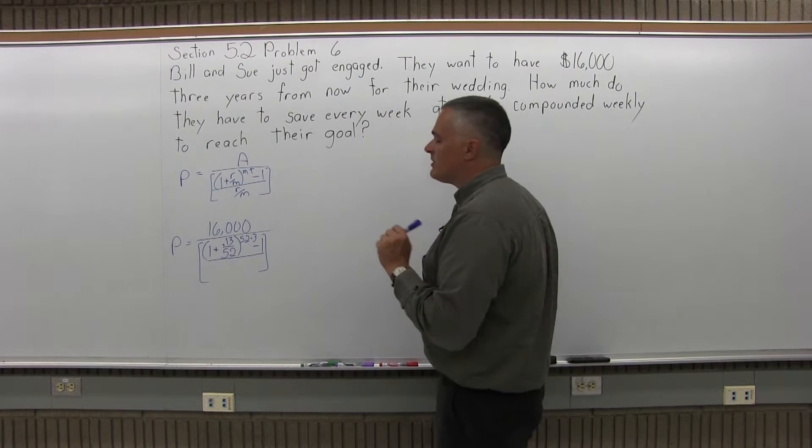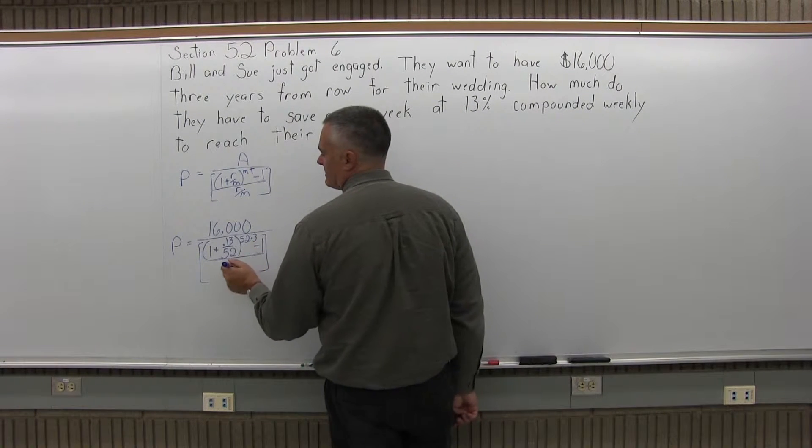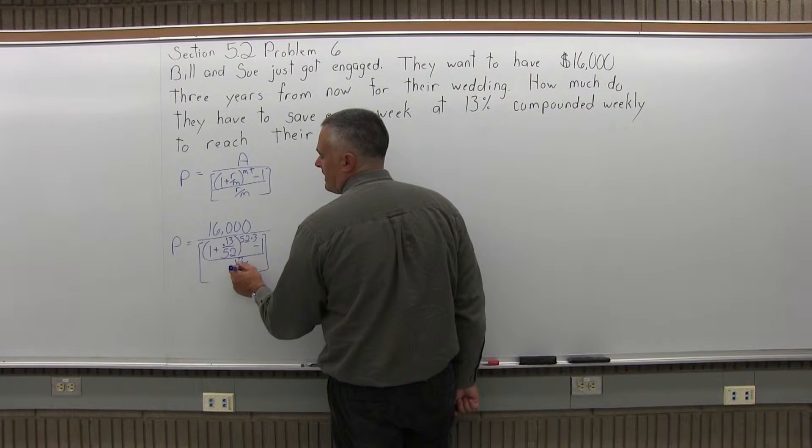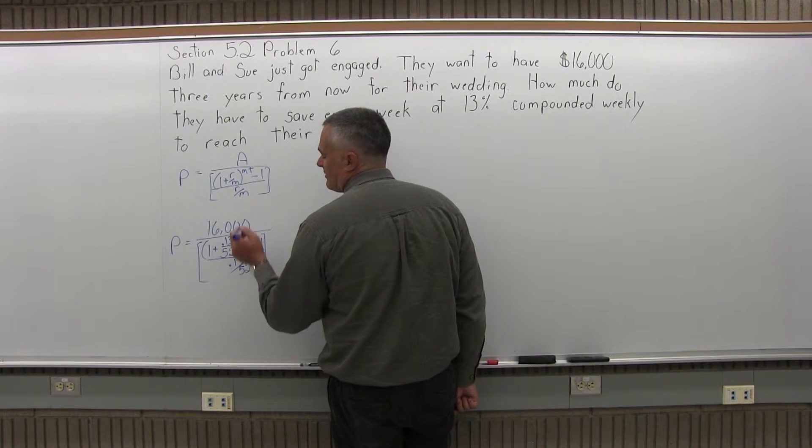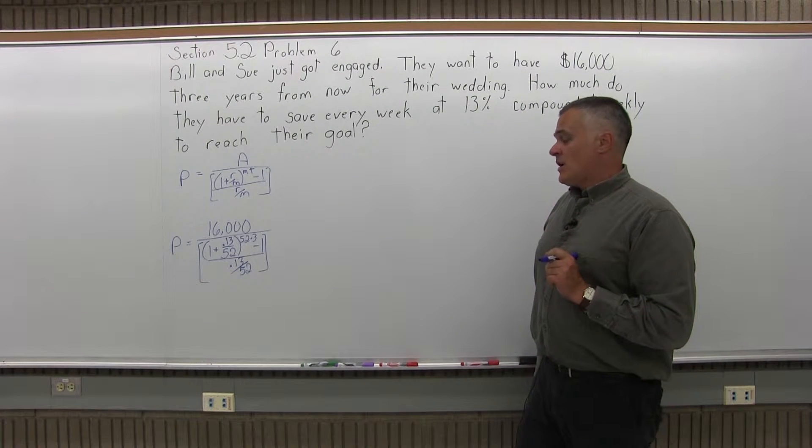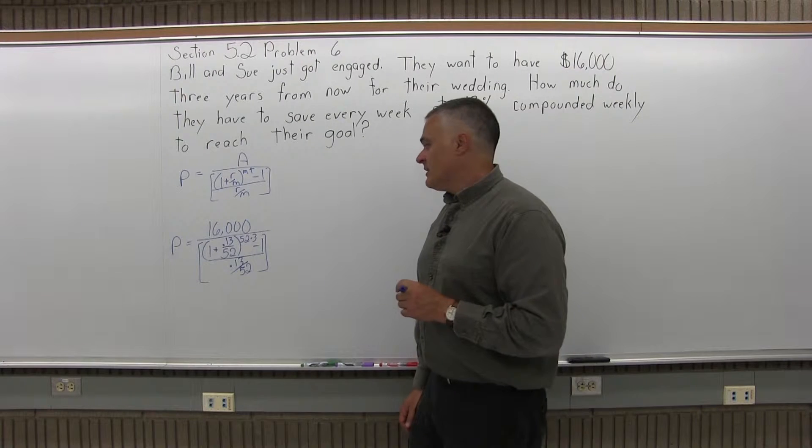There's a minus 1 after the parentheses and in the denominator of the brackets, R over M. 0.13 for the R, the rate as a decimal, and 52 for the M, the number of times compounded per year for weekly compounding. Now the formula is filled out.